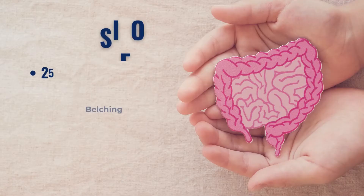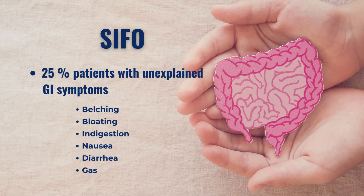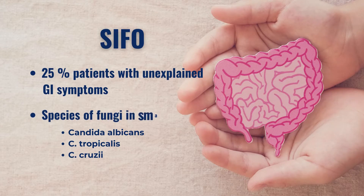In the case of SIFO, or small intestinal fungal overgrowth, about 25% of patients with unexplained GI symptoms such as belching, bloating, indigestion, nausea, diarrhea, and gas have SIFO. We normally have small numbers of fungi in our gut, but too many, particularly in the small intestine, can be a problem. Offending fungal species include mostly Candida albicans, but also C. tropicalis, C. krusei, and other fungal strains.